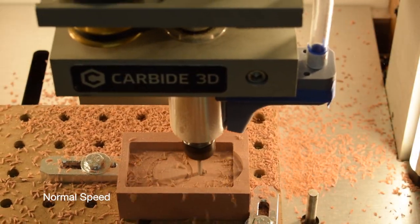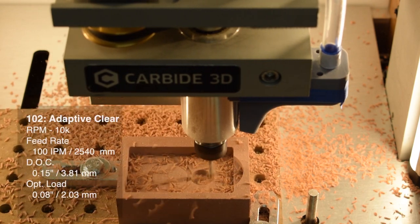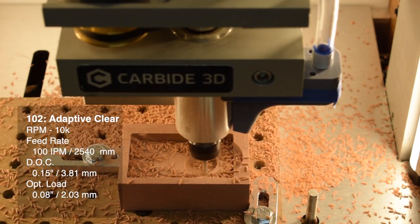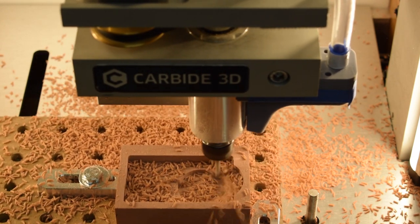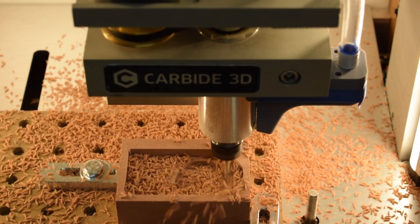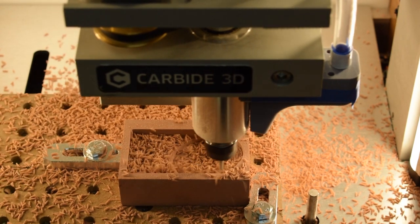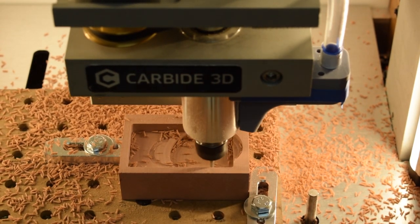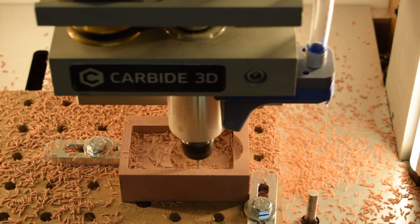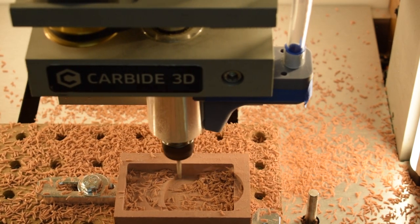I ultimately ended up doing an adaptive clear at 10,000 RPM, maxing out the Nomad at 100 inches per minute, using a .08 inch optimal load and a .15 inch depth of cut, more than one times the diameter of the end mill. If you wanted to use a basic pocketing toolpath, just use the optimal load as your step over. In case you're wondering, this is 96 times more aggressive than my aluminum recipe.